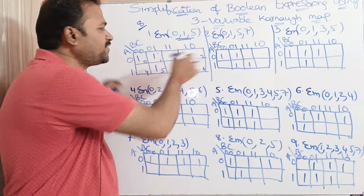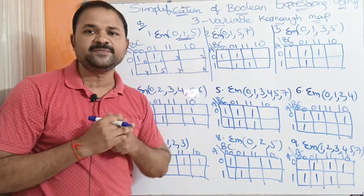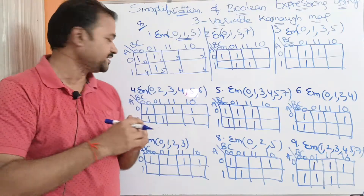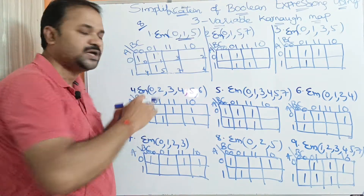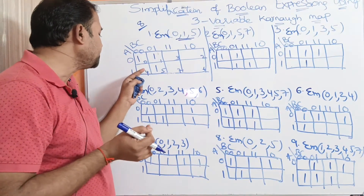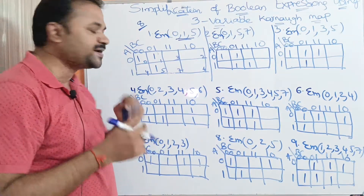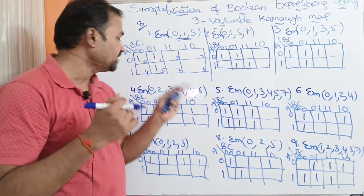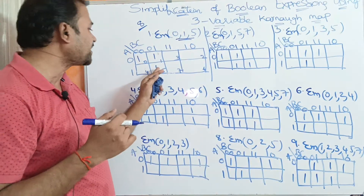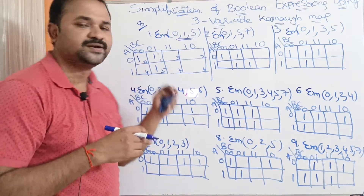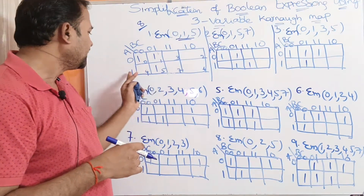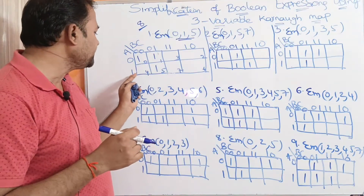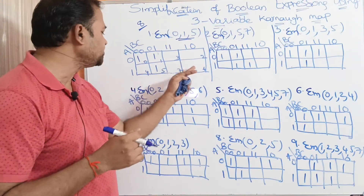The cell (1,00) represents A B-bar C-bar — minterm 4. The cell (1,01) gives A B-bar C — minterm 5. The cell (1,11) gives A B C — minterm 7. The cell (1,10) gives A B C-bar — minterm 6.